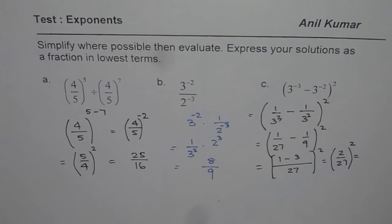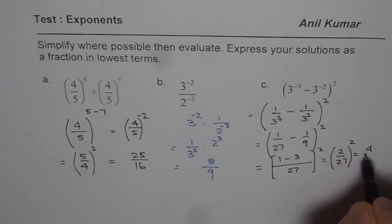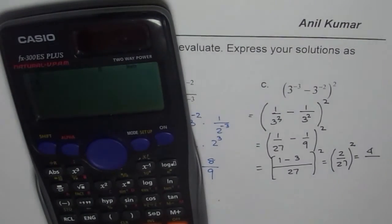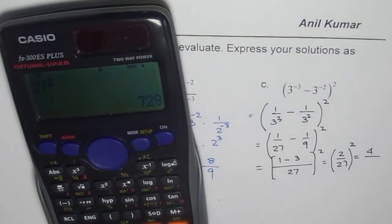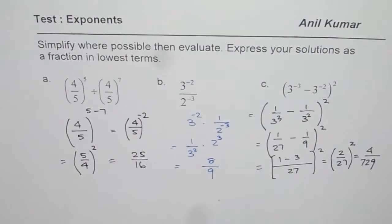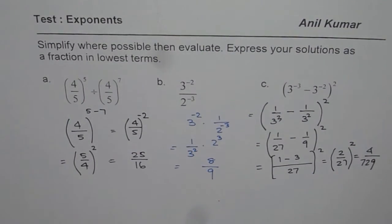2 squared is 4. For 27 squared, we can use the calculator: 27 squared equals 729. So the simplest form is 4 over 729. I hope that helps. Thank you.